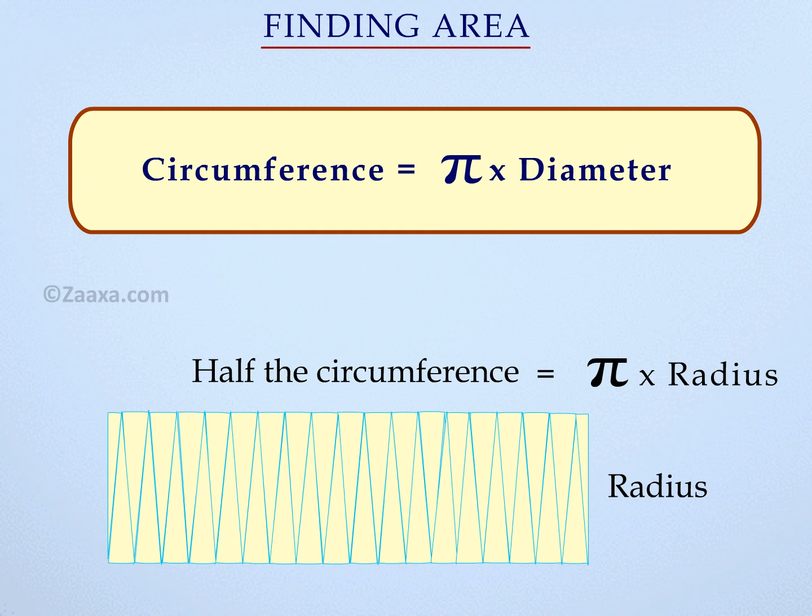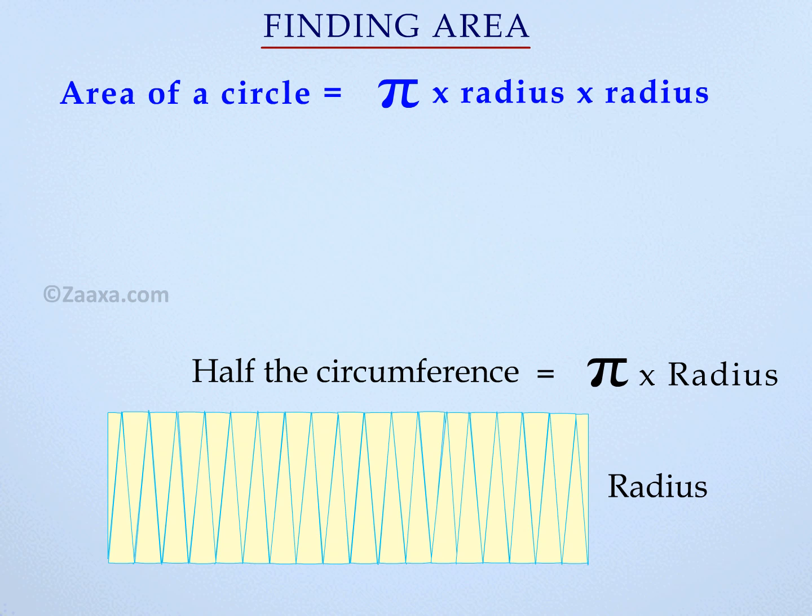You know we need to multiply the length and breadth of a rectangle to find its area. So in order to find the area of this rectangle, we need to multiply the length and breadth, which could be written as pi r squared.